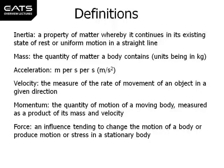Velocity is the measure of the rate of movement of an object in a given direction. Momentum is the quantity of motion of a moving body, measured as a product of its mass multiplied by velocity. Therefore only moving objects can have momentum — contrast this with inertia.